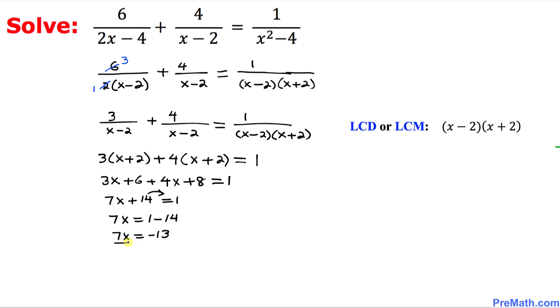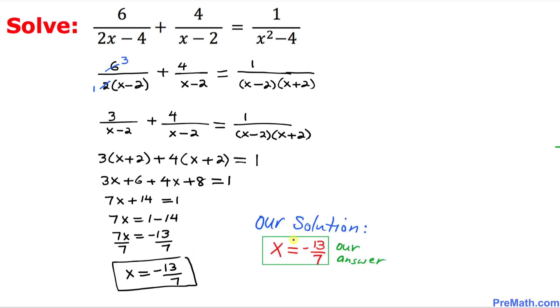Let's divide both sides by 7. So x equals negative 13 over 7 is our solution. Thus, our solution turns out to be x equals negative 13 over 7.